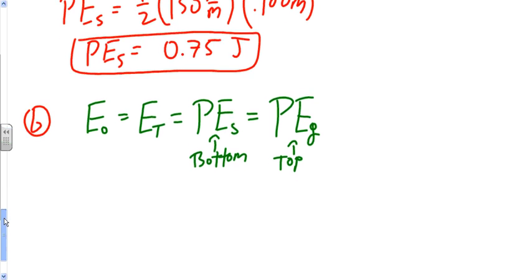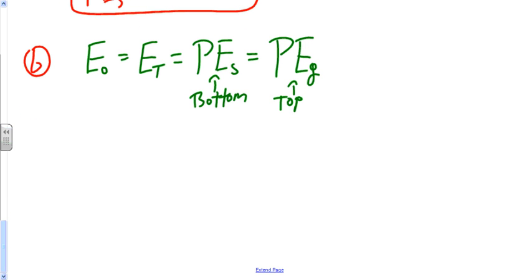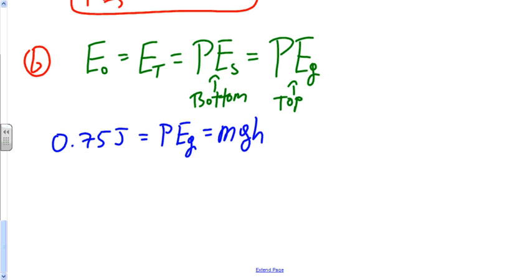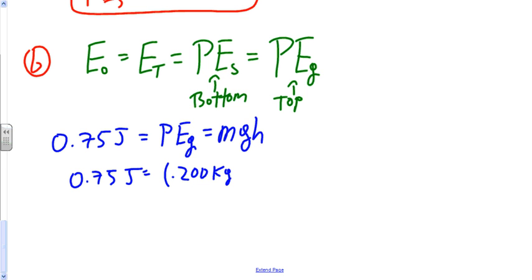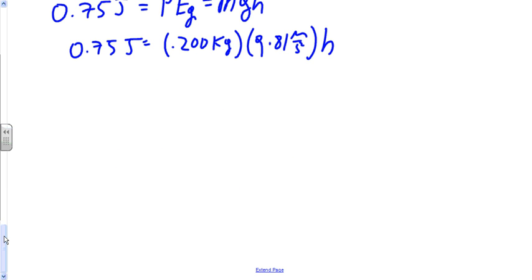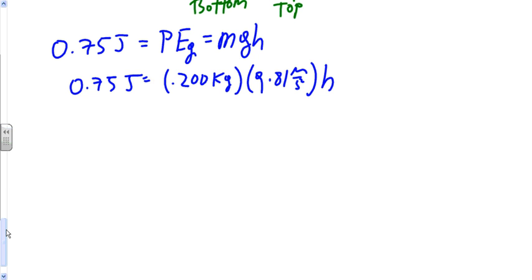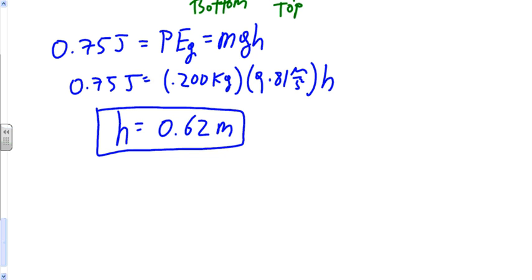Using the 0.75 joules of total energy and setting it equal to MGH: 0.75 joules = 0.200 kilograms × 9.81 meters per second squared × H. Dividing 0.75 by 0.2 and then by 9.81 gives H = 0.62 meters. So the spring toy will rise to a height of about 0.62 meters — roughly a foot and a half.